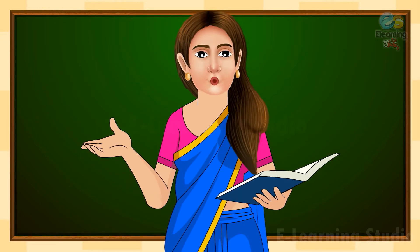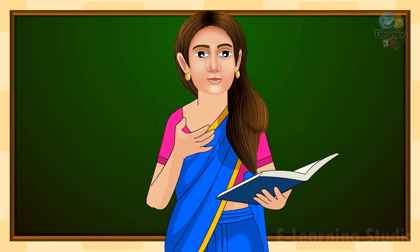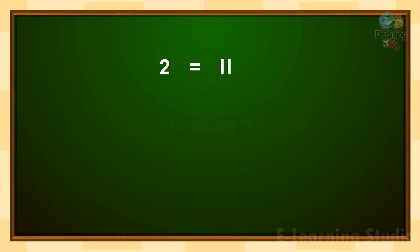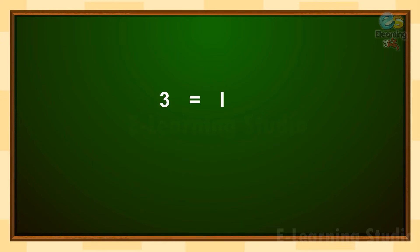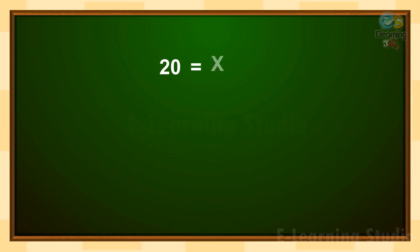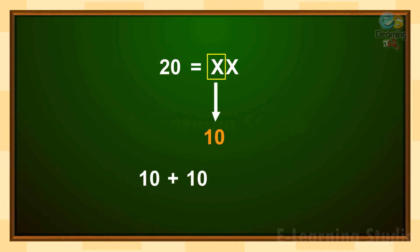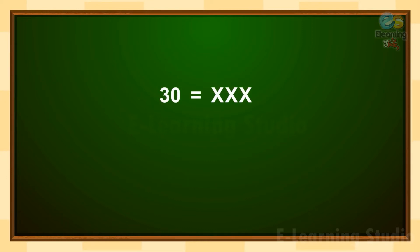Let's take some examples to understand this rule better. For 2, we use the letter I two times. Because letter I stands for one, one plus one is equal to two. For three, we use the letter I three times, so one plus one plus one is equal to three. For twenty, we use letter X two times, because letter X stands for ten, so ten plus ten is equal to twenty. For thirty, we use letter X three times, so ten plus ten plus ten is equal to thirty.